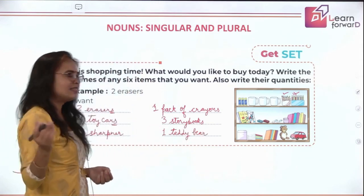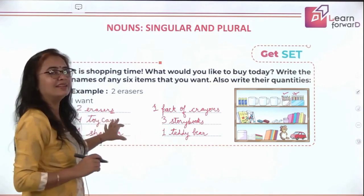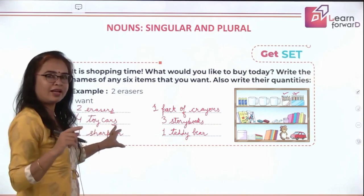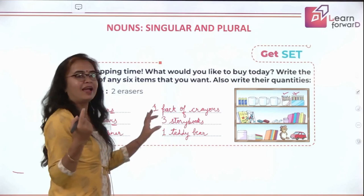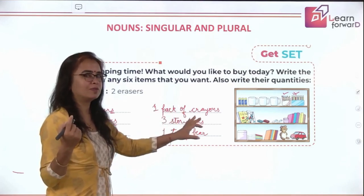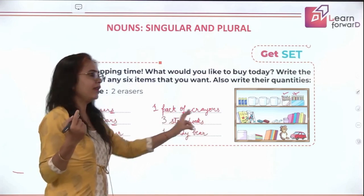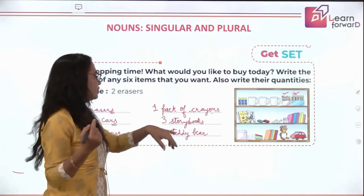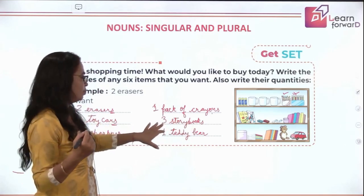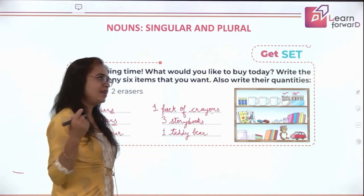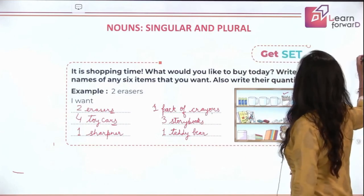Let's quickly see how many we are buying — one and how many more than one. Erasers: more than one. Toy cars: more than one. Sharpener: just one. One pack of crayons — the packet is one but there are many crayons inside. Storybooks: three, so many. Teddy bear: only one. That was a recap of one and many from the previous grade.